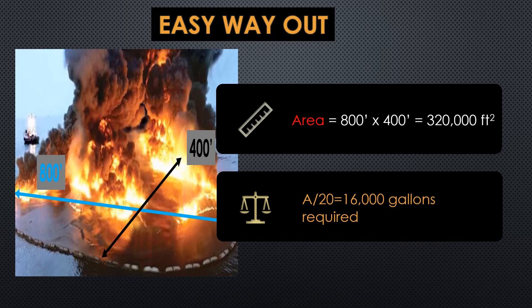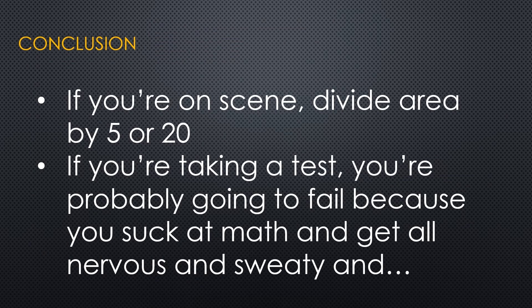If you multiply by 0.05, that's the same as dividing by 20. If you multiply by 0.2, that's the same as dividing by 5. All I've done is turn that into a division problem from the multiplication problem it was in the first place. So super easy: take your area, calculate your length times your width, divide by 5 or 20, and you know how much foam concentrate you need. Thanks for joining me and be safe out there.